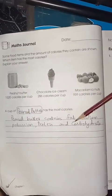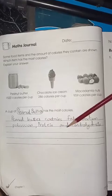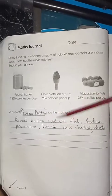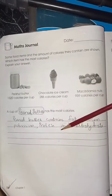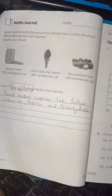Now explain your answer. Peanut butter contains fat, sodium, potassium, protein, and carbohydrate. You can write any other explanation if you want.